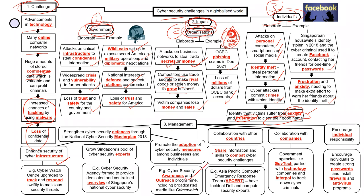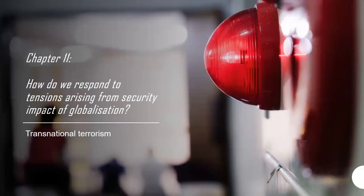Countries can also collaborate with other nations and share information to fight cybersecurity problems together. Companies can improve their security with government support if their data protection is weak. Individuals can be encouraged to set stronger passwords and use firewalls. Essay questions might ask which solution is more important — collaborating with other countries or encouraging individual responses. As long as there are these branches, a question can be set by picking any two to compare.